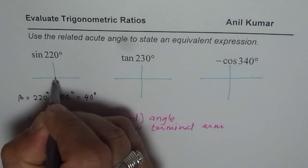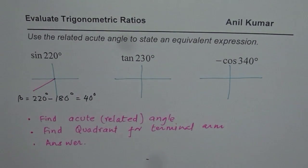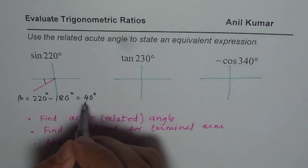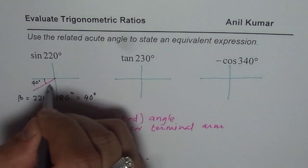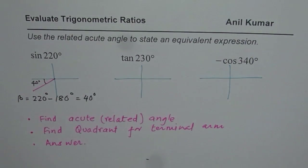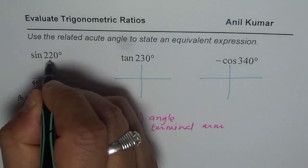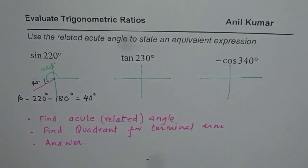That really means that when I say 220 degrees, the terminal arm is in quadrant 3. So we found that we are in quadrant 3 and the angle which we have here, or rather the acute angle, is 40 degrees. That gives us 220 degrees as the principal angle. So the related acute angle is 40 degrees.